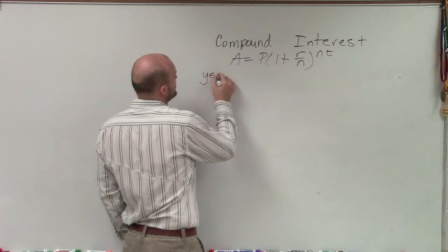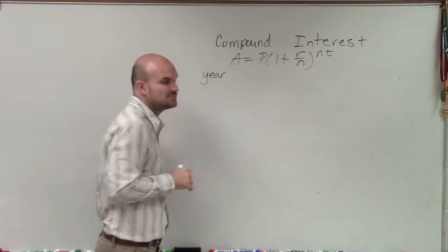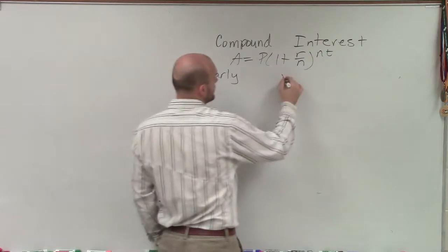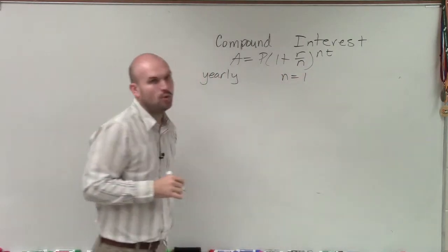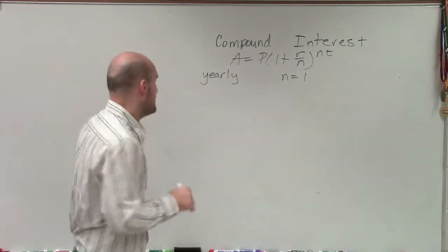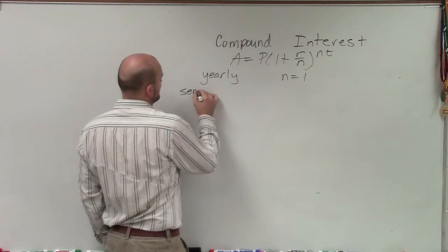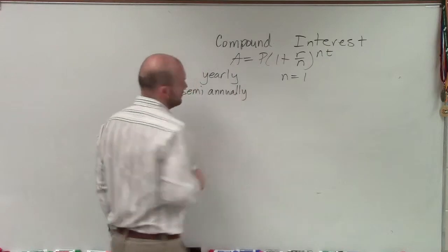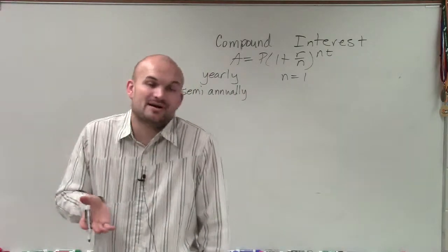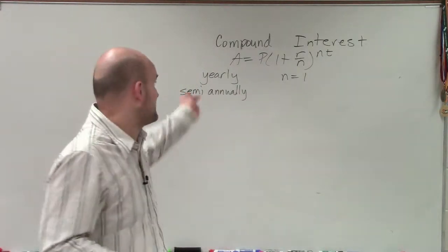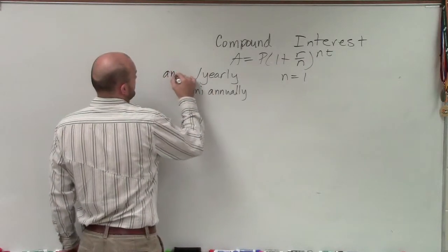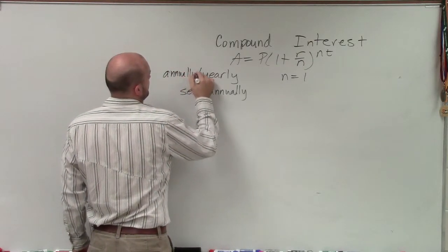So if I say you put some money into an interest bearing account, and it's going to be yearly, well therefore N is going to equal 1. Sometimes they call it semi-annually, right? Annually, if I say it compounds annually, that's the same thing as yearly—yearly or annually.